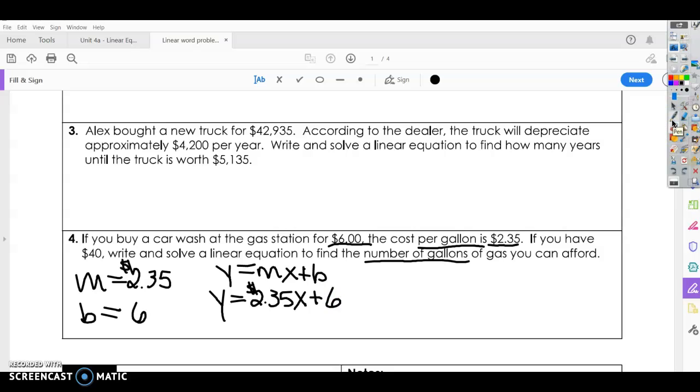If we know that we have $40 to begin with, I can say that $40 is the most that I can spend. So that is my dependent variable. So the first thing you're going to do is subtract $6 from both sides. So you're going to subtract $6 from $40. So $40 minus $6 is $34 equals $2.35 per gallon.